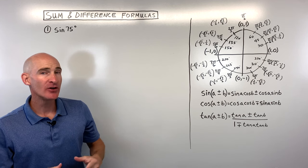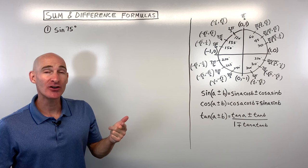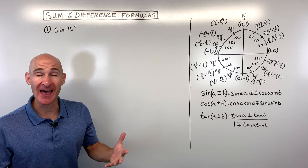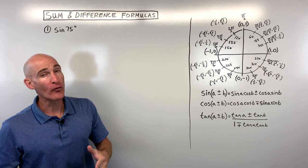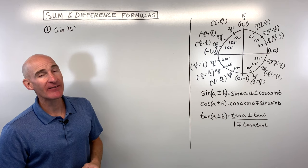In this video, you're going to learn how to work with the sum and difference formulas for sine, cosine, and tangent. We're going to go through six examples together to find exact values of trig functions of angles that we don't know from our unit circle, but we can use the angles that we do know on our unit circle. So let's dive into this video.